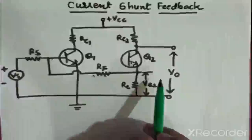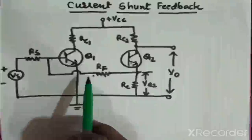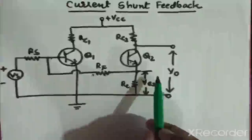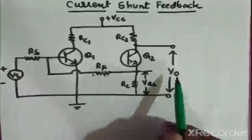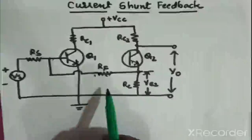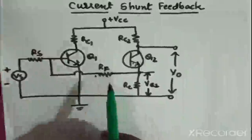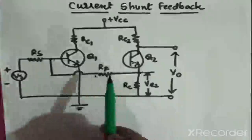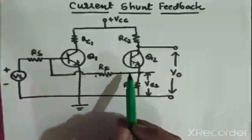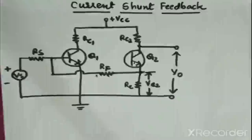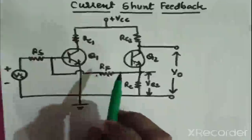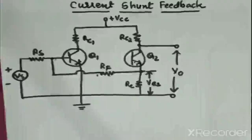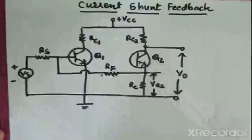The feedback goes from the emitter of the second transistor to the base of the first transistor through resistor RF. By shorting the output voltage, the feedback voltage is not zero. But if the output current IO is set to zero by open-circuiting the output loop, then feedback will be equal to zero. This is current sampling. Since the feedback signal is in parallel or shunt with the input, this is current shunt feedback.